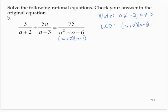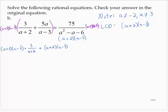So I'm going to multiply the entire equation, both sides, by a plus 2 times a minus 3. All right, so the left-hand side, I have a plus 2 by a minus 3 times 3 over a plus 2 plus a plus 2 by a minus 3 times 5a over a minus 3. And on the right-hand side, I've got 75 over a plus 2 times a minus 3 times a plus 2 by a minus 3.